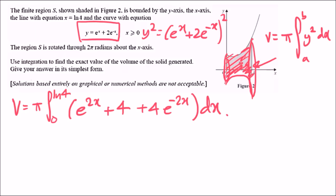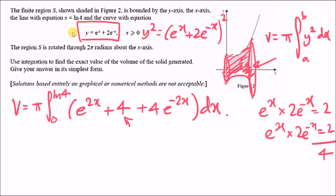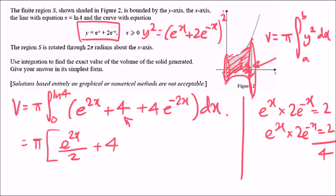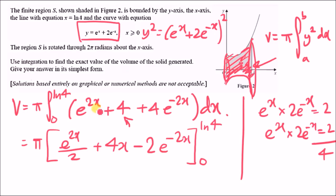Integrating: e to the 2x gives e to the 2x over 2, the constant 4 gives 4x, and 4e to the negative 2x gives minus 2e to the negative 2x. This is evaluated from 0 to ln 4.